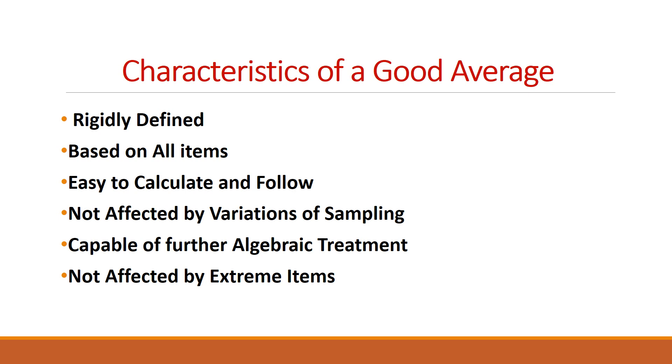The next feature is it should be based on all the items in the group. Next is, it must be easy to calculate the average. And it should not be affected by the variations of sampling. Even if the samples are selected on different basis, the average should not differ much. That is, even if we are calculating the average from different samples from the same population, we must get more or less the same average. Only such an average can be a good one.